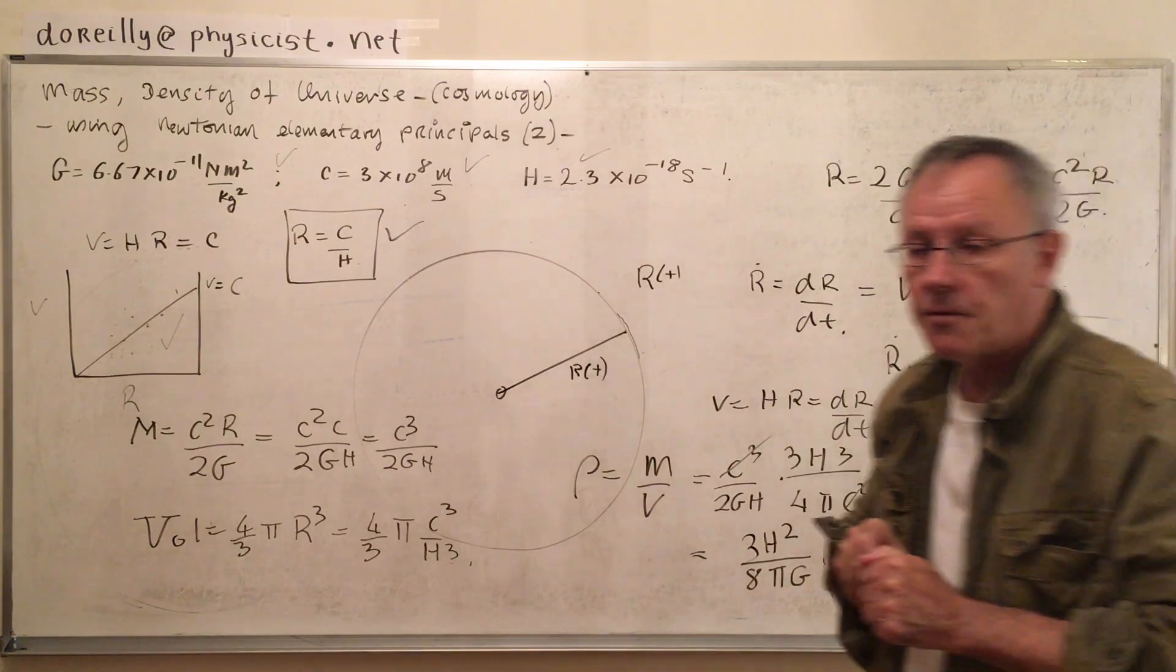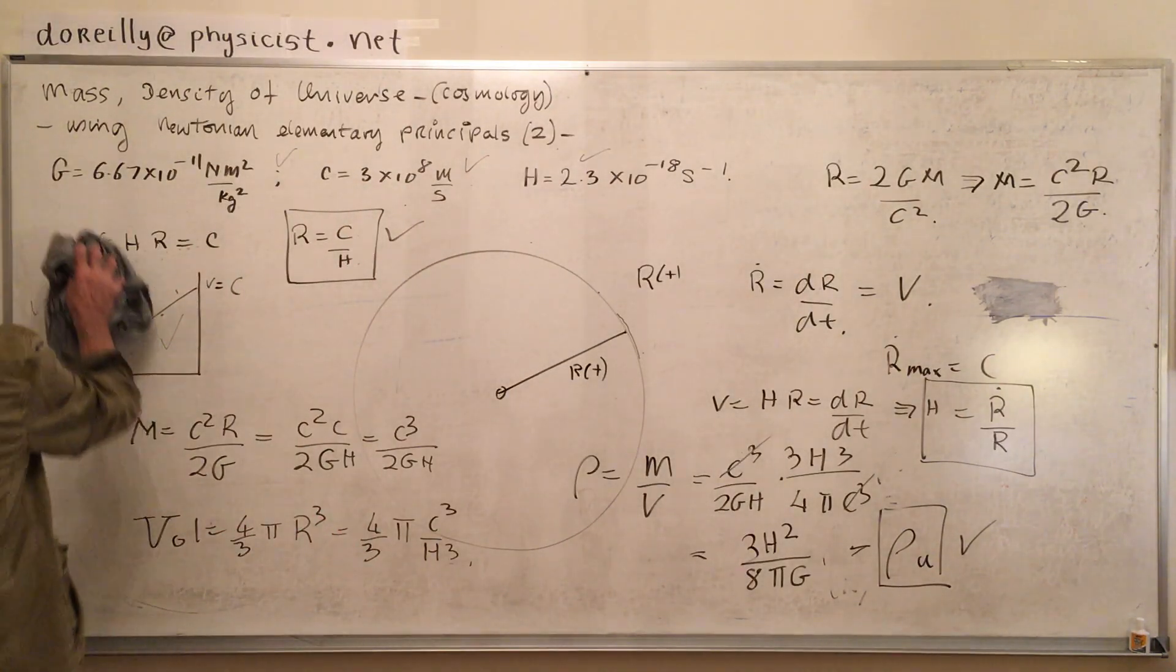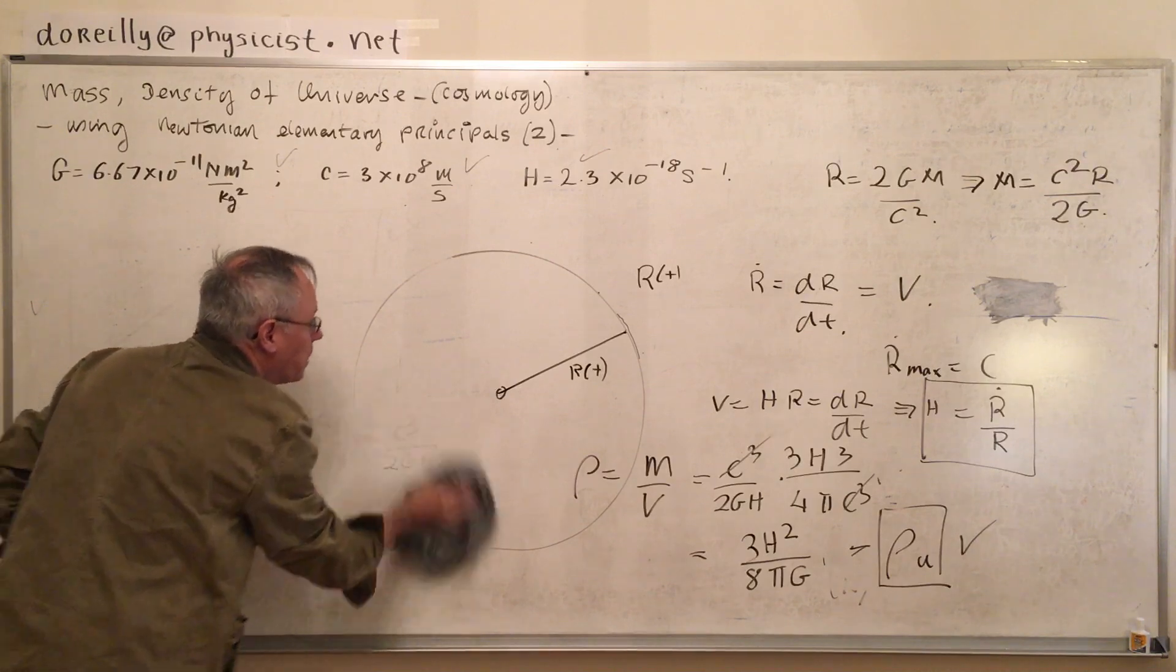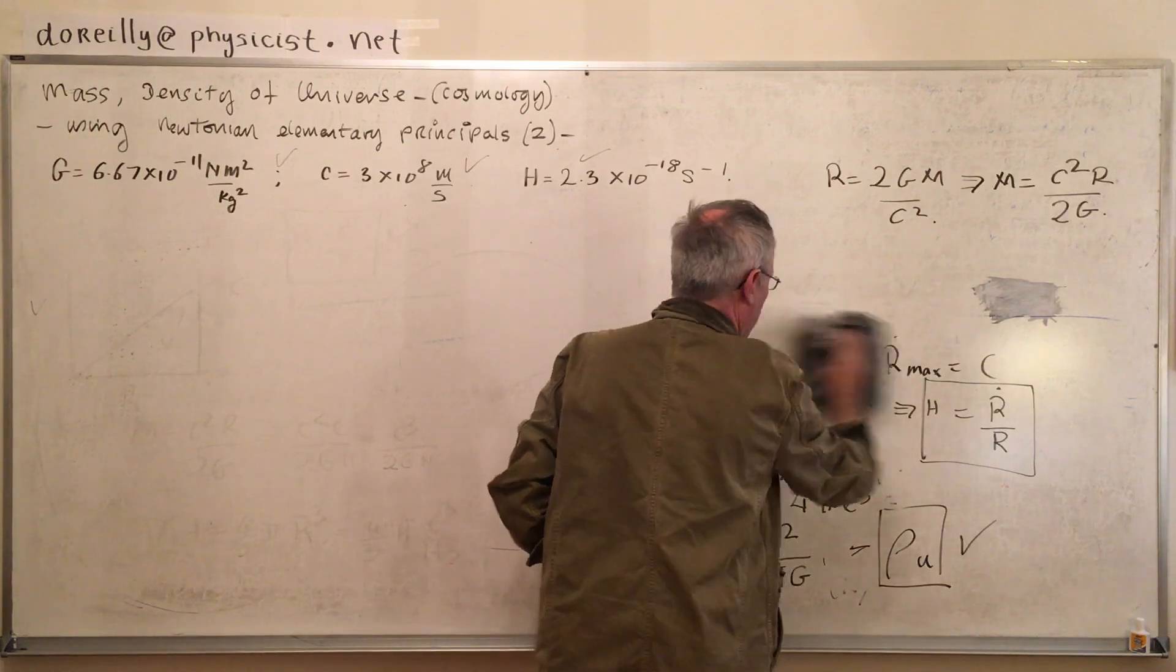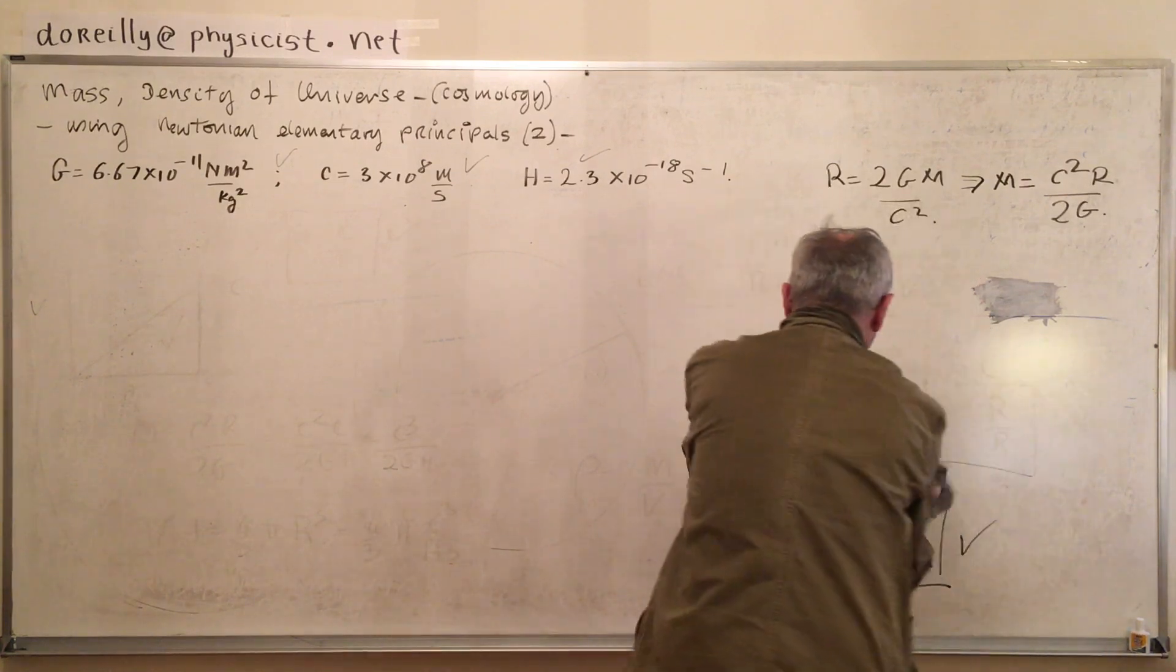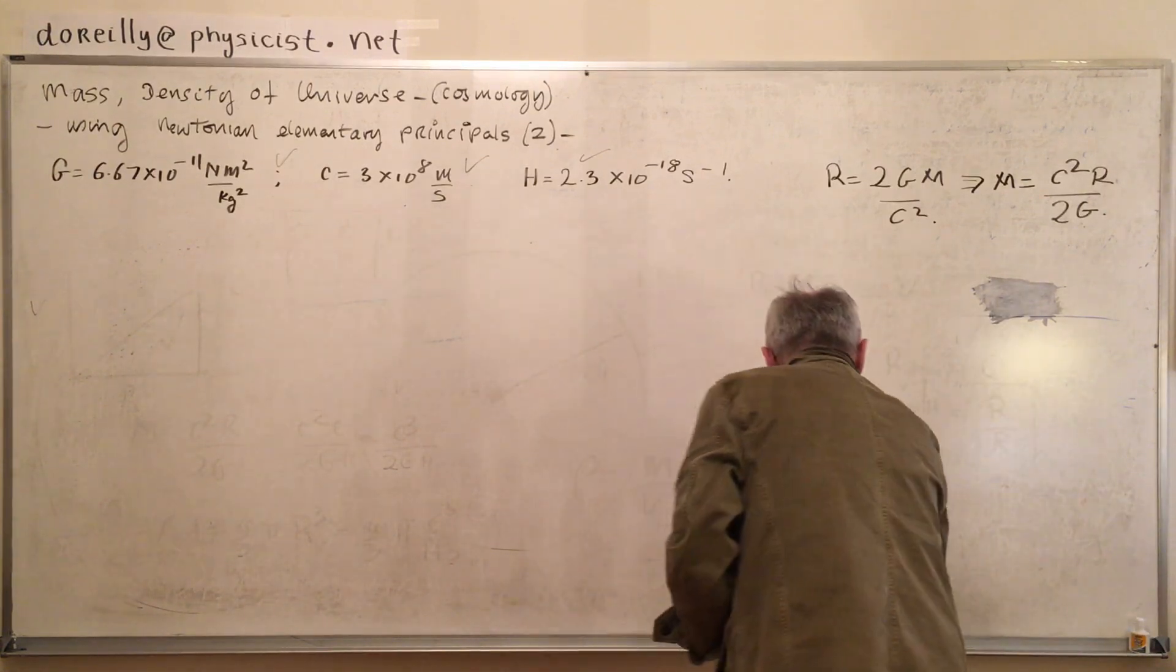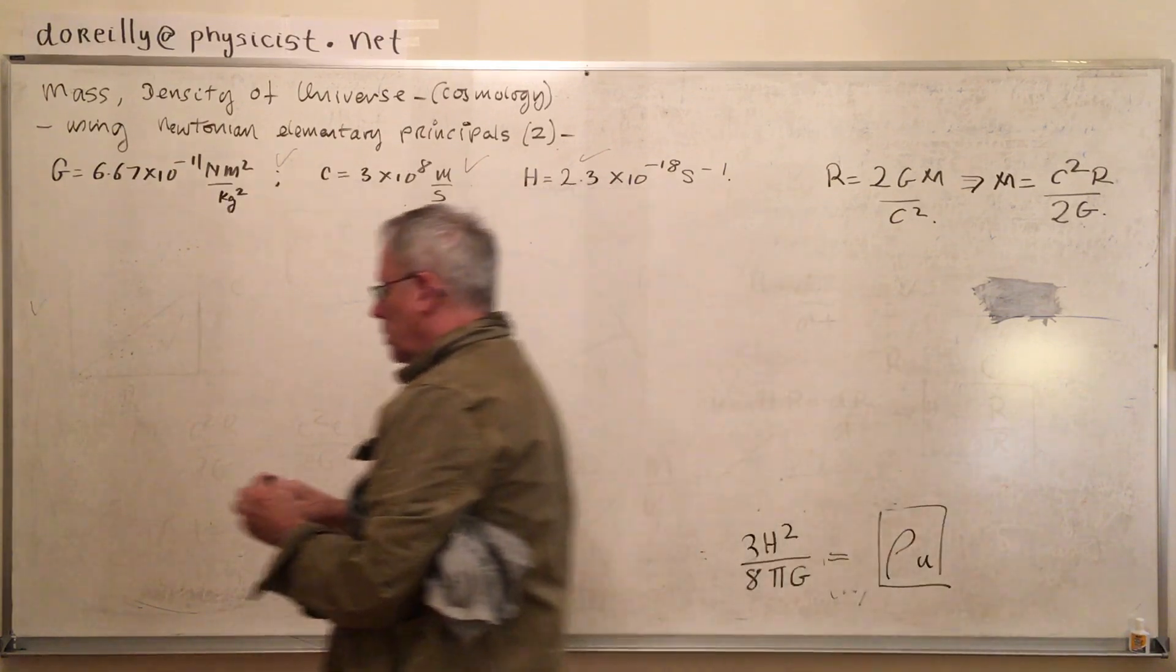Let's do it now using the Friedman equation, in case k = 0. That's the way it's done by cosmologists. We derive the Friedman equation, which is normally derived using general relativity in the field equations.